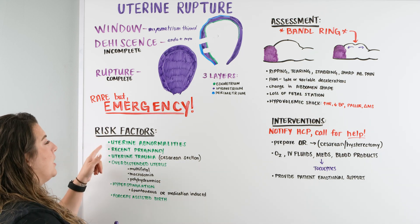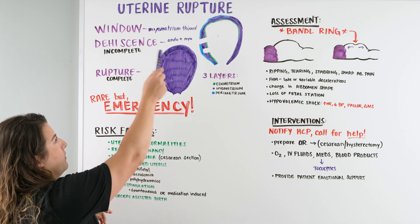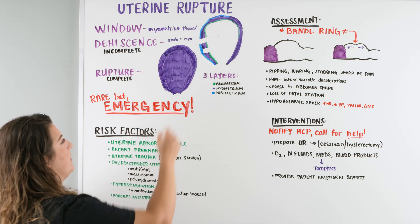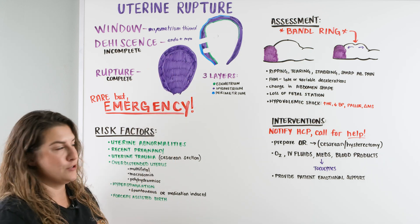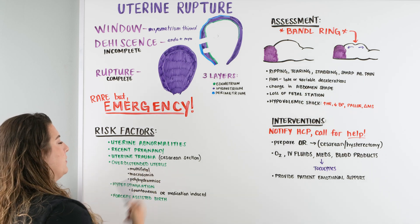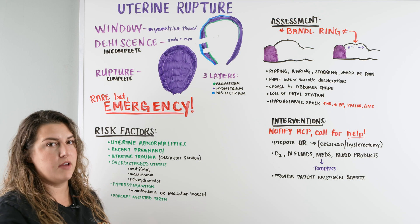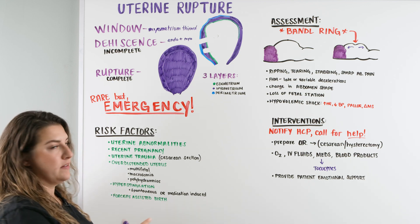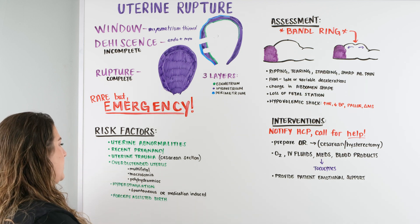The biggest risk factors are uterine abnormalities. One we just touched on is the uterine window — that thinning of the myometrium which is a potential site for a tear. We also consider recent pregnancy: if a patient just had a baby and then got pregnant again, the uterus didn't have time to reheal and then expand again for another baby.